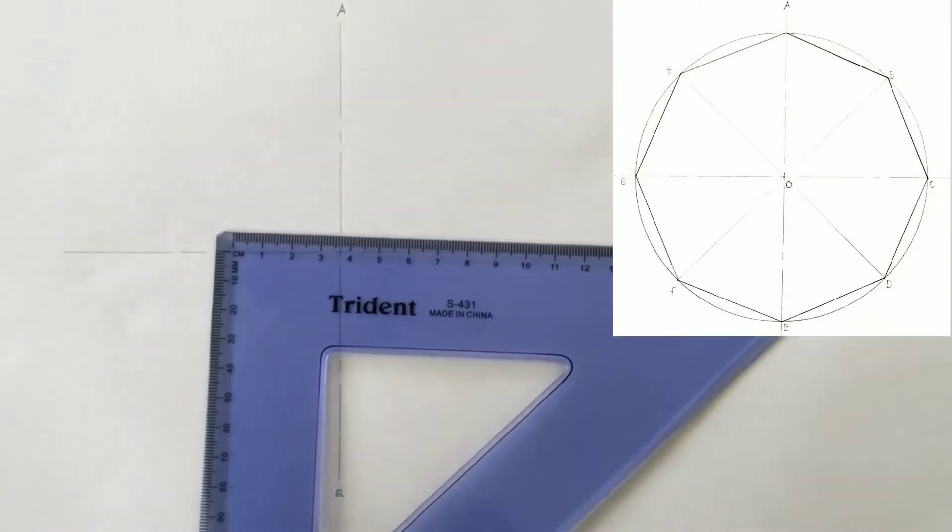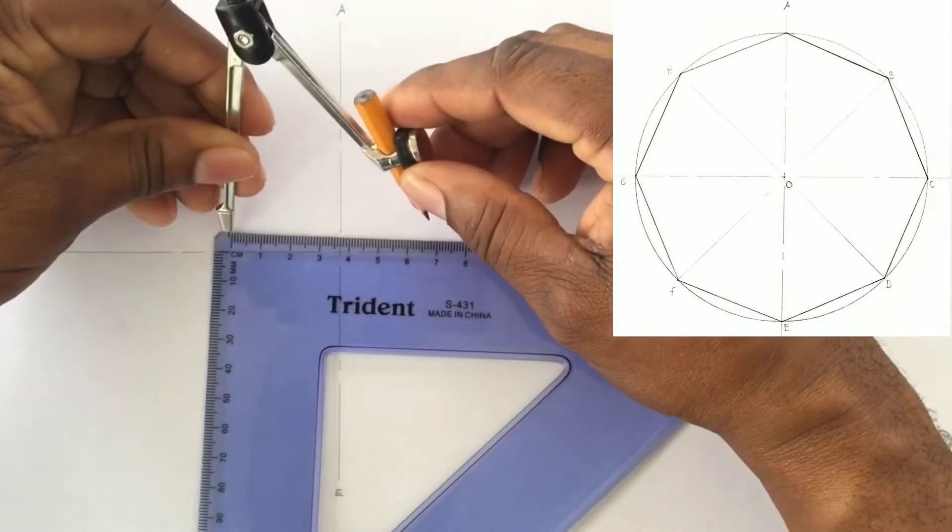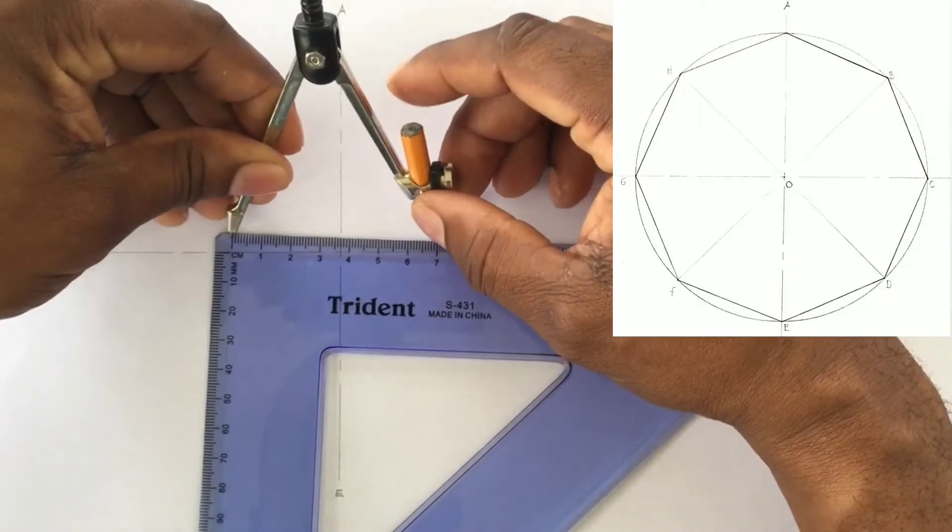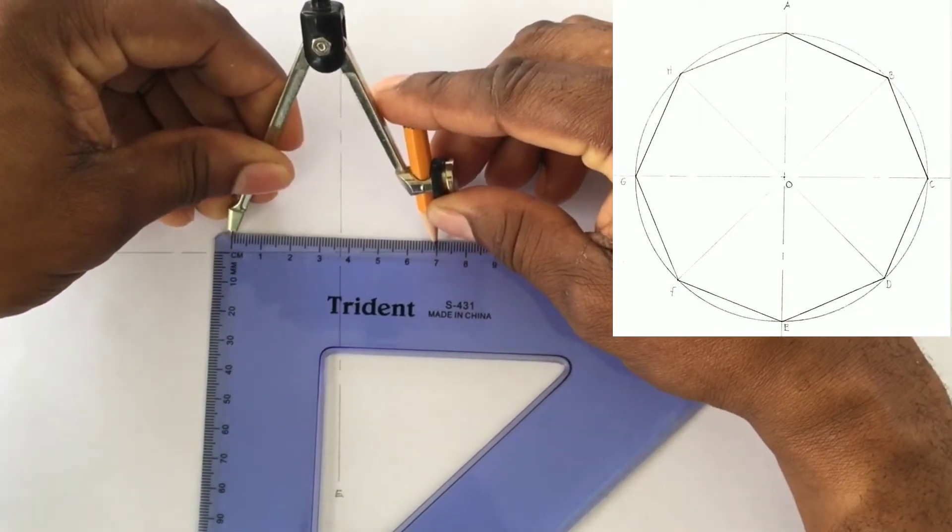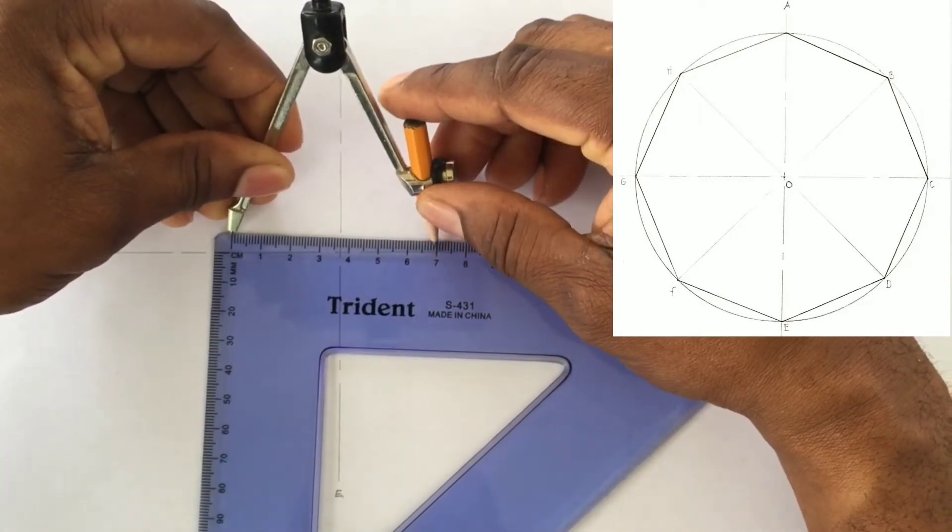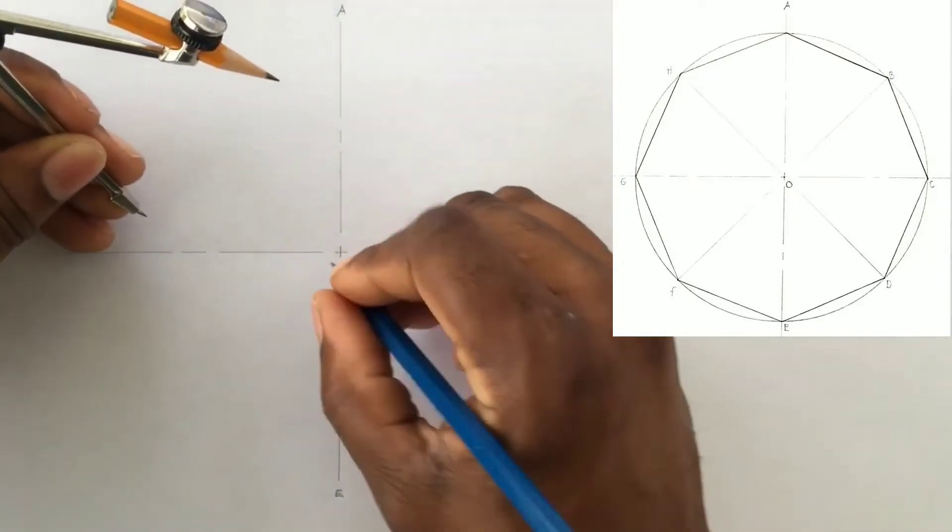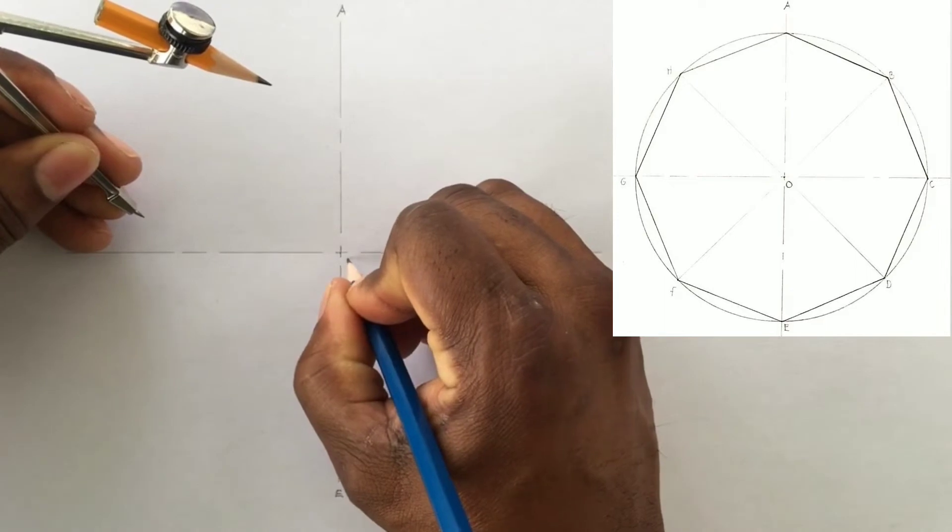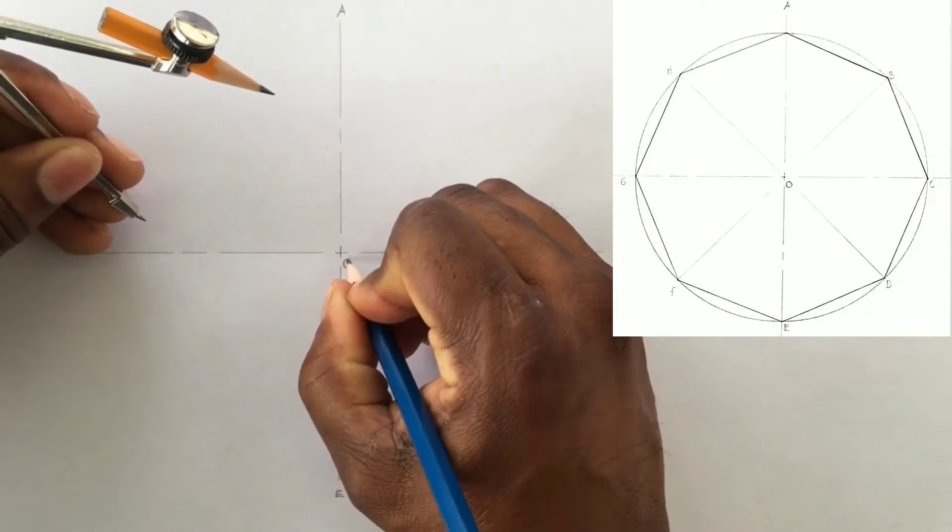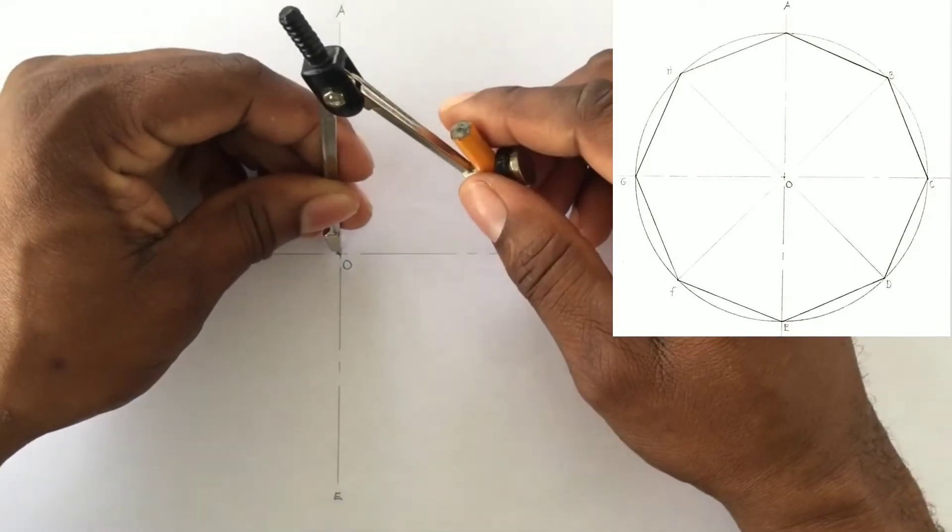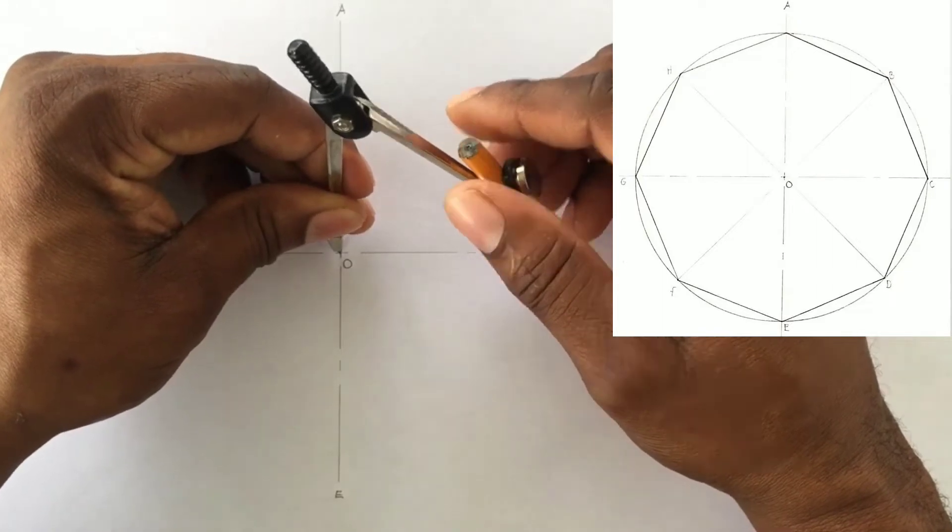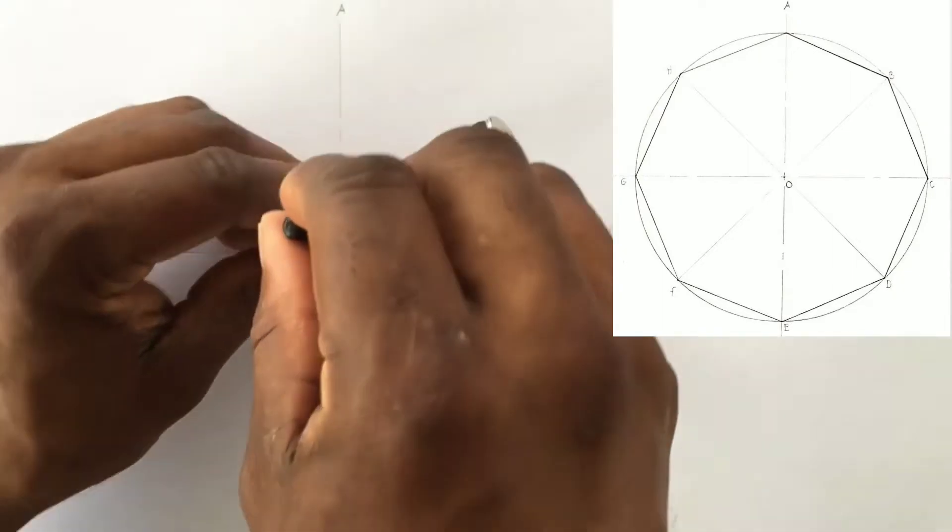We will now open our compass to a radius of seven centimeters. Seven centimeters is the same as 70 millimeters. Label the center O, where the two center lines intersect. Then we will scribe our circle from the center O.